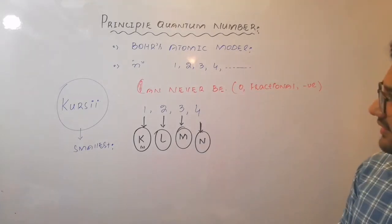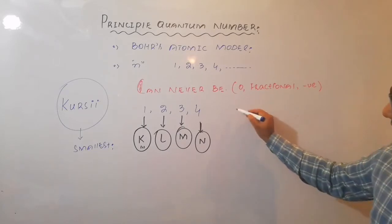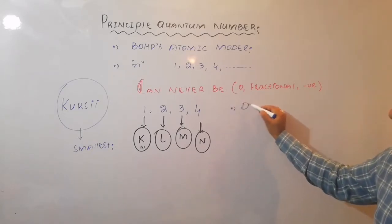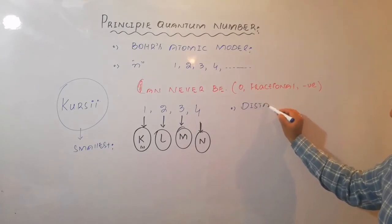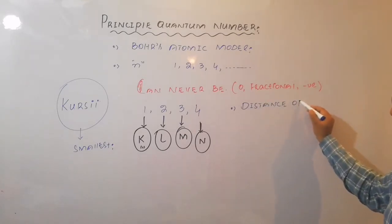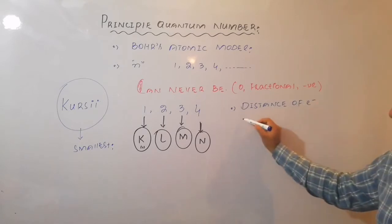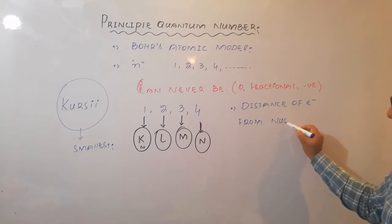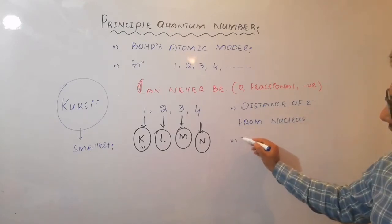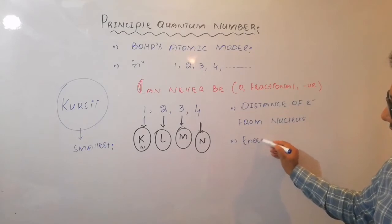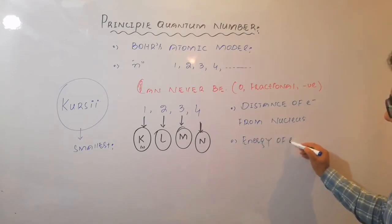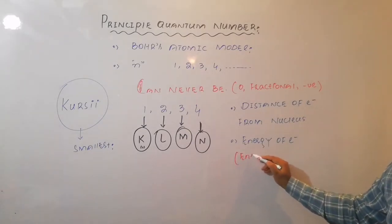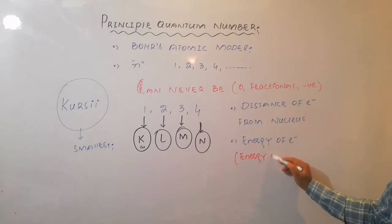The second information that principal quantum number provides us: it is the distance of electron from nucleus and energy of electron. When I say energy of electron, it is the same as energy of shell.